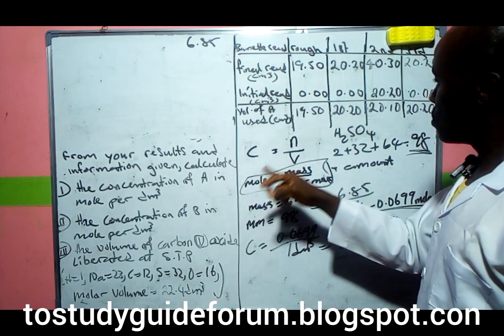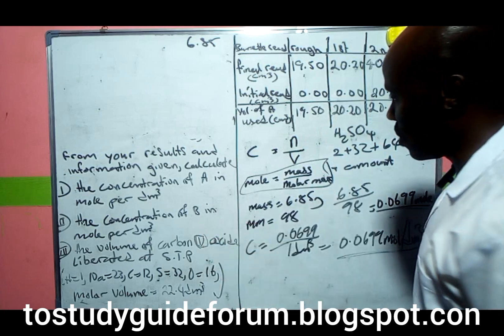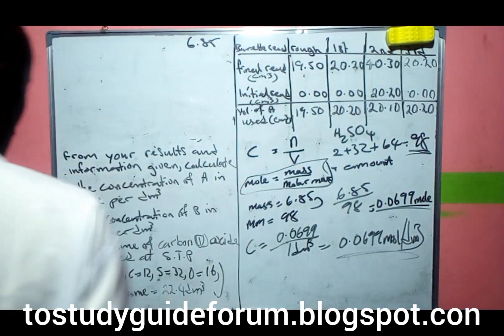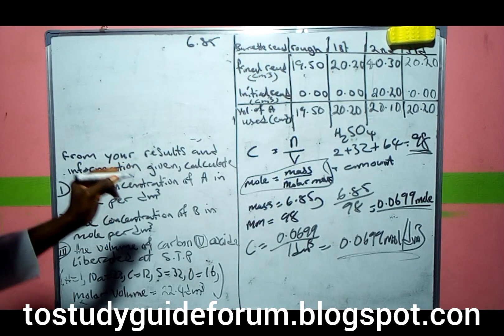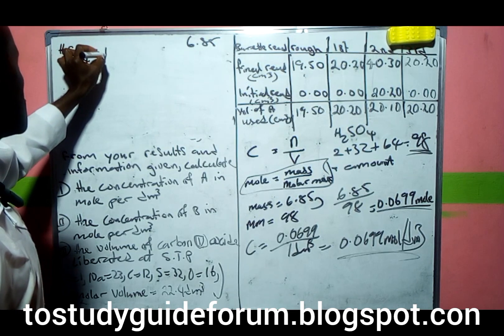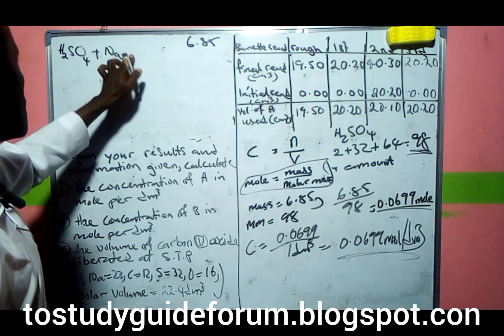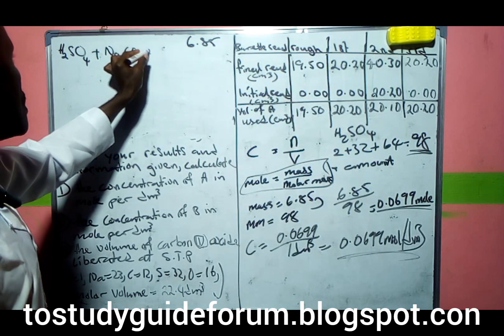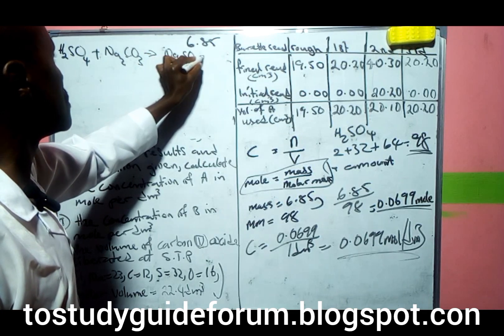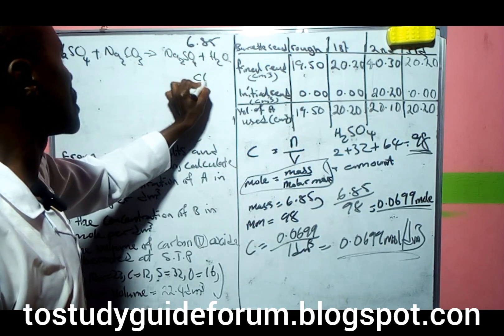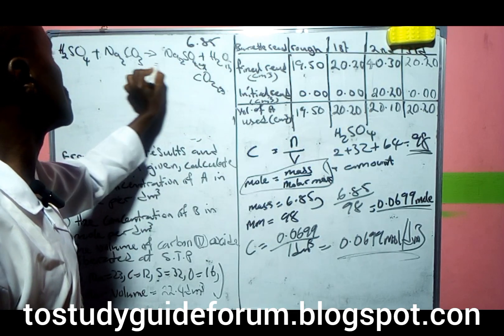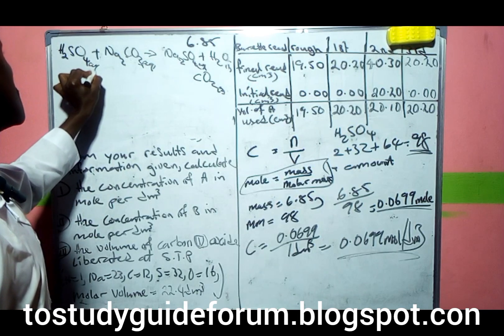To get this, we'll use our normal formula. But first, the balanced chemical equation: H2SO4 plus Na2CO3 gives Na2SO4 plus H2O plus CO2.